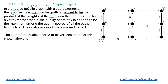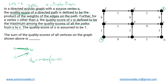For any vertex v other than s, the quality score of v is defined as the maximum among the quality scores of all paths from s to v. For instance, if there are two paths reaching vertex b — one through a and another through c — then the quality score of b is the maximum of those two path scores. For the source vertex s, the quality score is assumed to be 1.